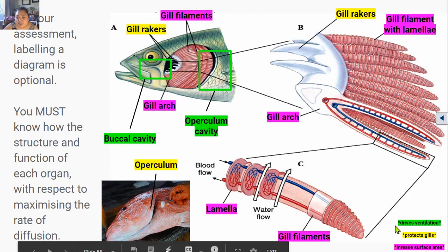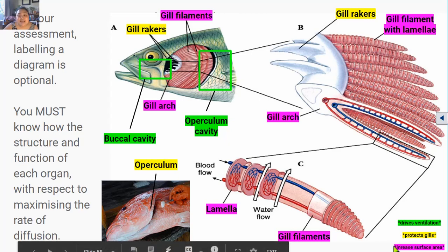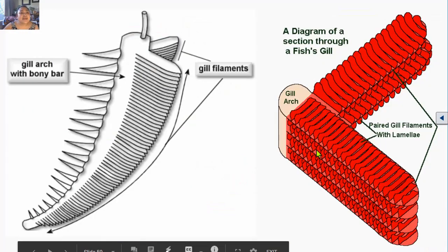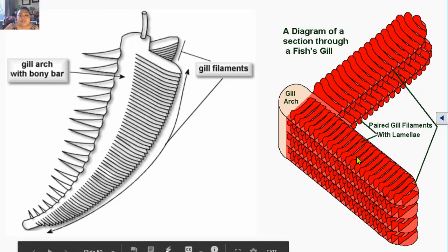Looking at the notes here: structures highlighted in green drive ventilation, structures highlighted in yellow protect the gills, and structures highlighted in pink increase surface area. The gill arch supports gill rakers — bony structures that protect the gill filaments — and also supports gill filaments that look like a fine-tooth comb or feathers. Zooming into the gill filaments, you can see they are folded into many lamellae, which form the specialized respiratory surface.